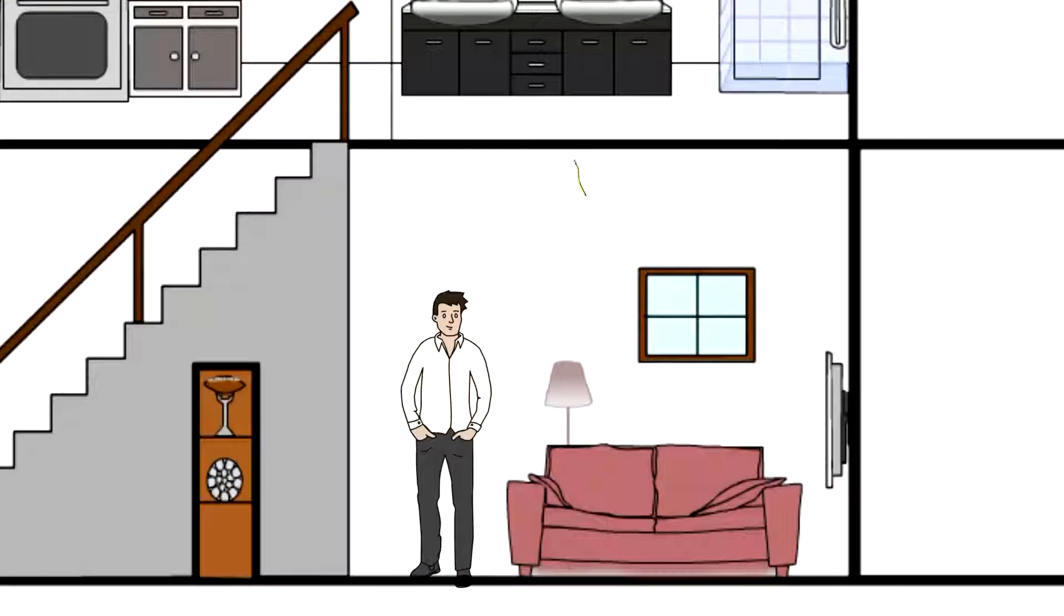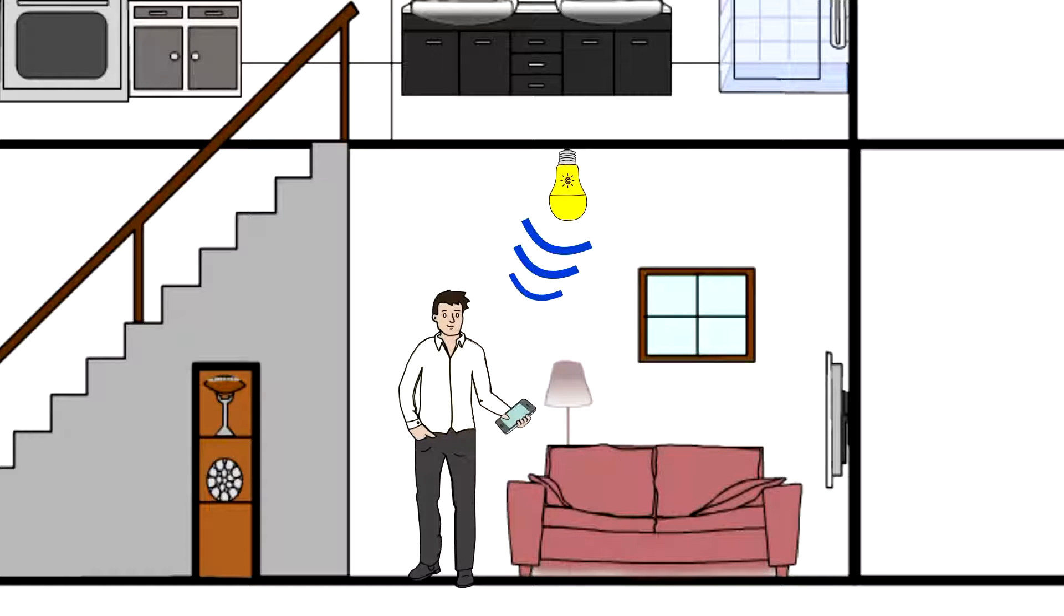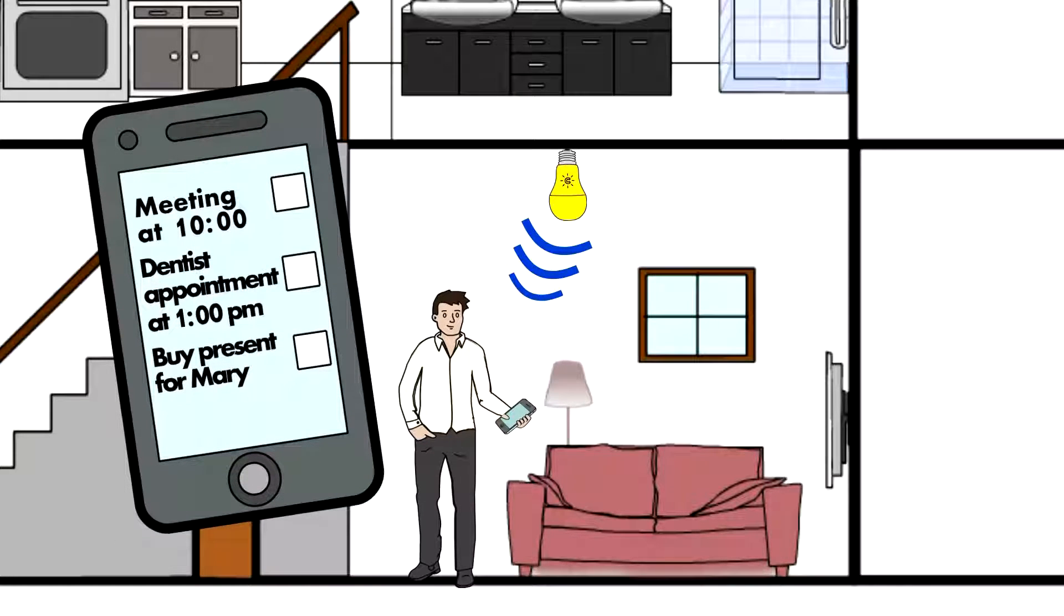Now when Josh enters his living room in the morning, the light bulb immediately sends a signal to his phone and shows him his to-do list for the day.